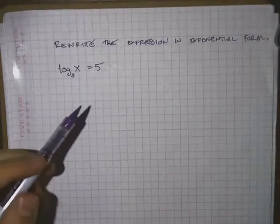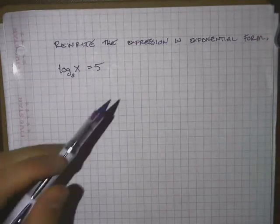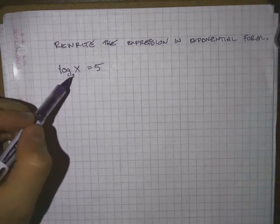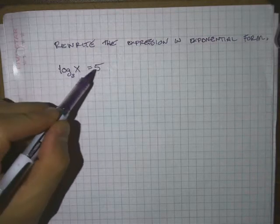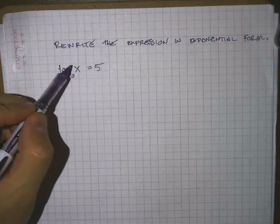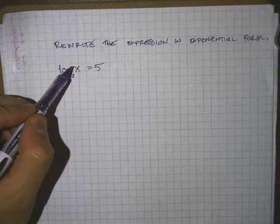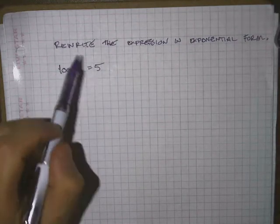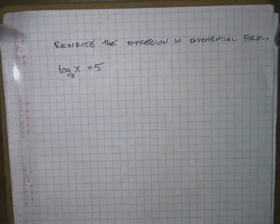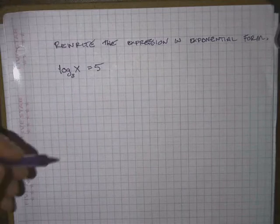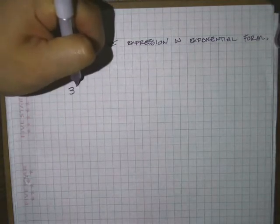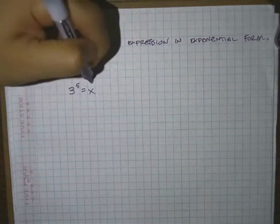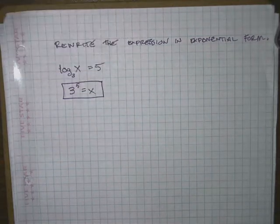Now remember, any time we do a log, we have to rewrite this in terms of 3 to the 5th power is equal to x, and that's all we have to do for a problem like this. So we want to rewrite it in terms of an exponential form. We're going to say that 3 to the 5th power is equal to x, and that's all I have to do.